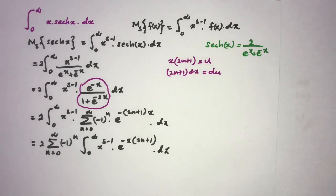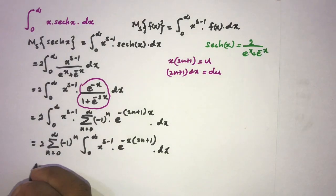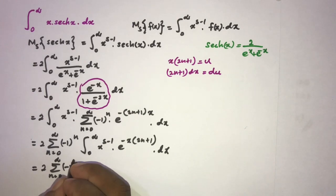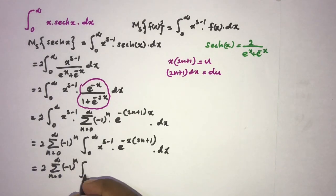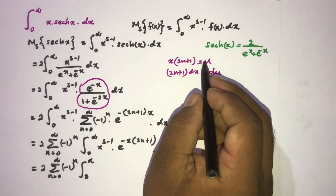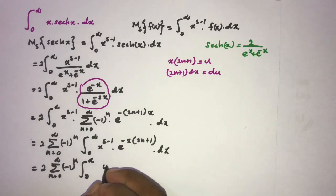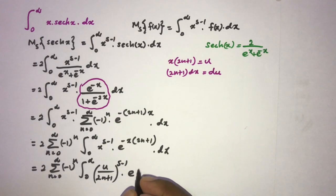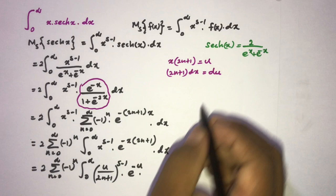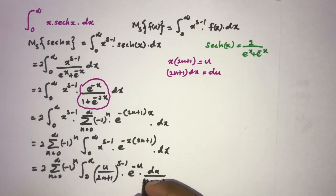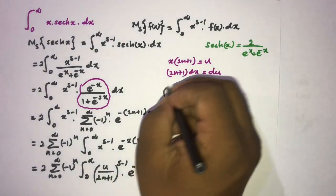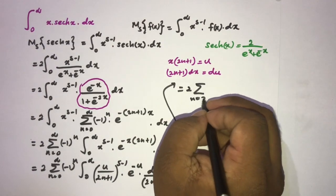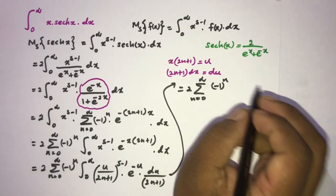Plugging in, with limits still 0 to infinity, we get 2 times the infinite sum from n=0 to infinity of (-1)^n times the integral from 0 to infinity of (u/(2n+1))^{s-1} times e^{-u} times du/(2n+1).